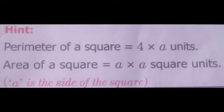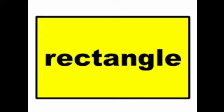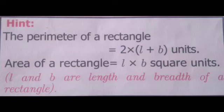For a square, perimeter is equal to 4 × a units, where a is one side of the square. Area of a square equals a × a square units. For a rectangle, perimeter equals 2(l + b) units, and area of a rectangle equals l × b square units, where l and b are the length and breadth.